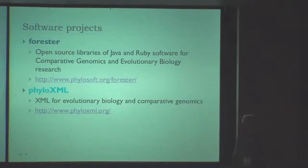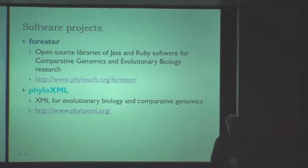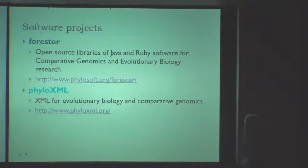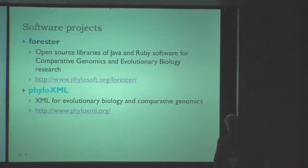Some of my software projects include Forester, which is a collection of mostly Java and Ruby tools for comparative genomics and evolutionary biology. Another project is PhyloXML, which is an XML standard for phylogenetic trees or phylogenetic networks. There's a paper and a website if you want to know more about that.